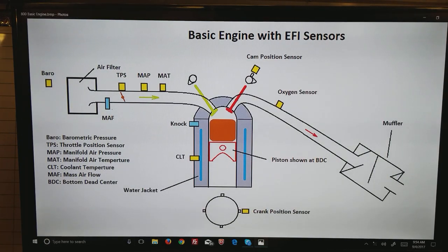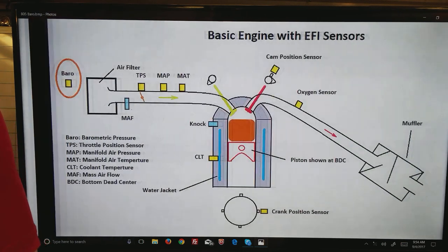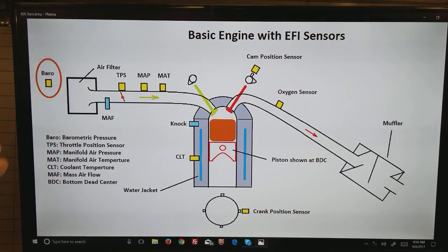So now here is your basic motor again with all of the sensors that go through that we use to measure and calculate the airflow. Let's go through each one of these at a time. On the left is the Baro, remember the same Baro that we were measuring before. There is a sensor that sits outside the air filter somewhere.